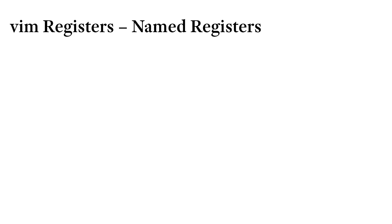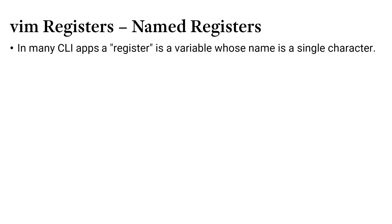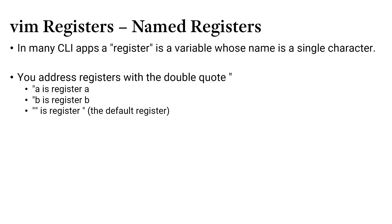Named registers give us the ability to store text in a specific variable that we can then paste from. So when you see the word 'register', you should think this is just a simple variable. This is true in many other CLI applications as well. A register tends to be associated with a variable whose name is a single character. To address a register, we'll use the double quote — so double quote A would be saying I'm addressing register A, or double quote B, register B.